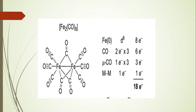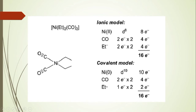The next binuclear metal carbonyl is Fe₂(CO)₉. Here you find two types of CO ligands: one is a terminal ligand and another acts as a bridging ligand. Iron in the zero oxidation state has 8 electrons (3d⁶4s²). Terminal CO donates 2 electrons each, so 3 terminal COs donate 6 electrons to one iron atom. Each bridging CO donates 1 electron to each metal atom, so 3 bridging COs contribute 3 electrons. One metal-metal bond contributes 1 electron. Totally you get 18 electrons.